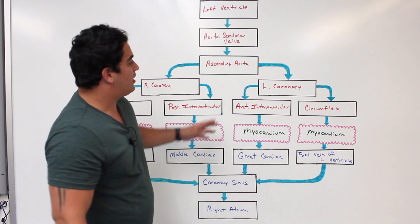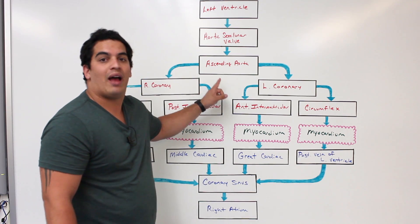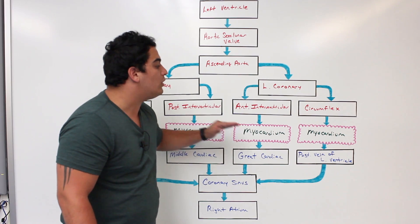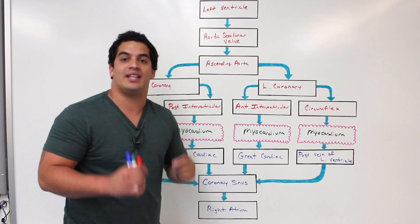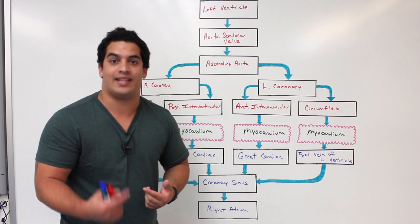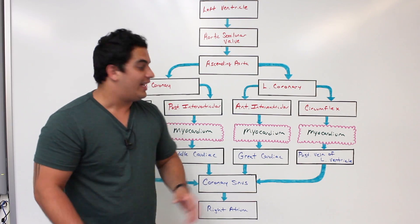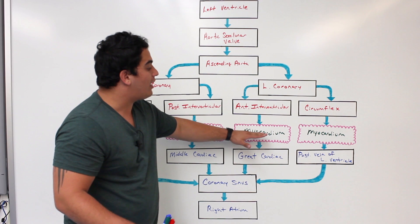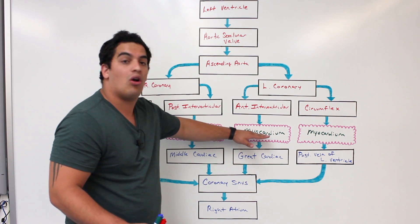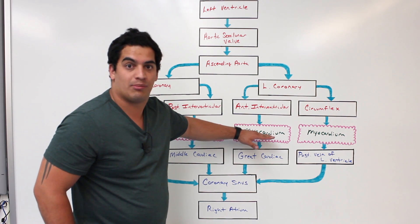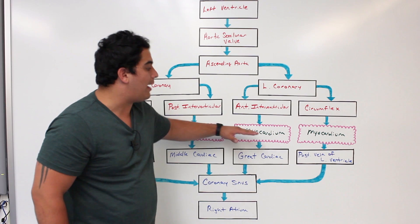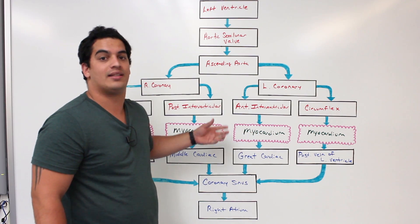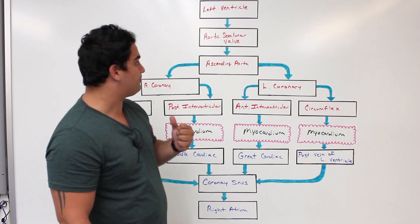One last important point: the myocardium only gets its blood supply when the heart is in diastole, the relaxation period. If the heart rate is excessively high, the heart will not be in diastole long enough for the myocardium to receive an adequate blood supply. It's very important that there is a sufficient diastole period so the myocardium gets the oxygen it needs to continue functioning properly.